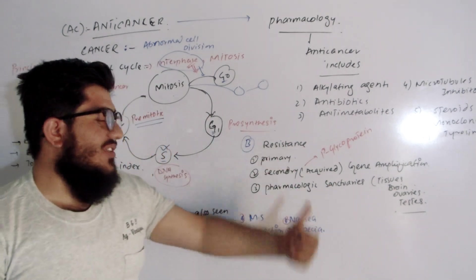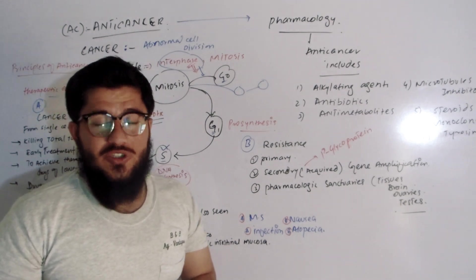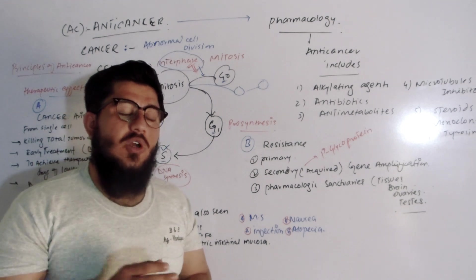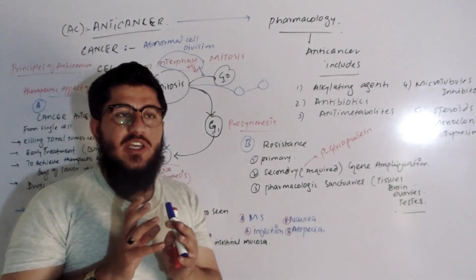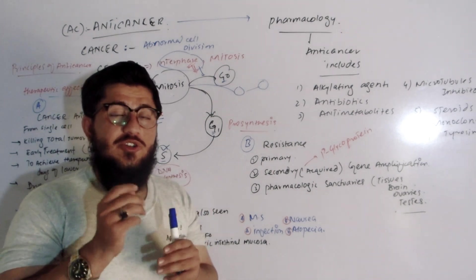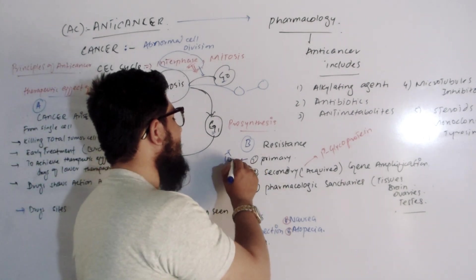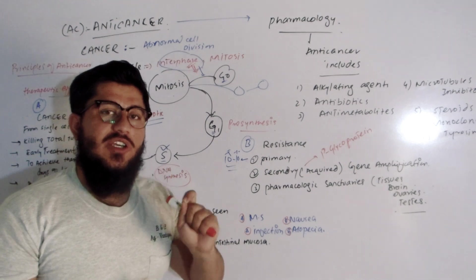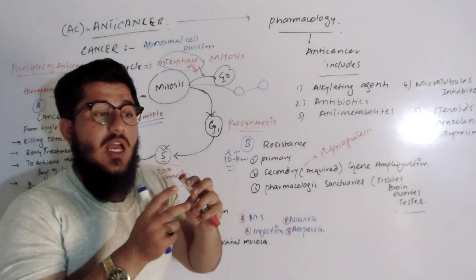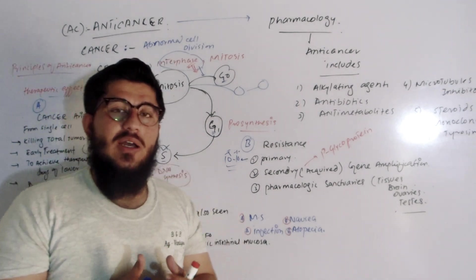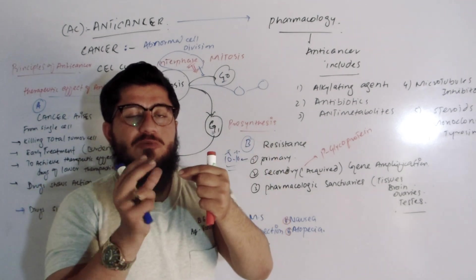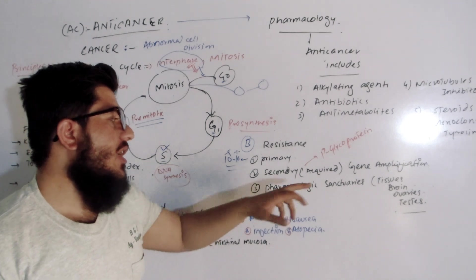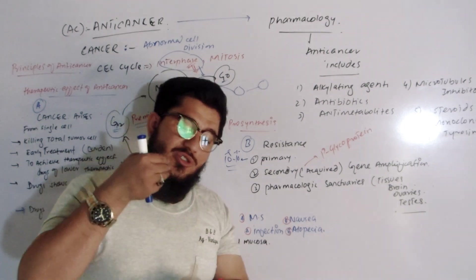The second point we are discussing is resistance. When we use chemotherapy many times, resistance develops in two ways. The first is primary resistance: when you are using an anti-cancerous drug, the cancerous cells undergo gene mutations at a rate of around 10 to the power of minus 5 to minus 10. When the gene is mutated, the drug's specific target — the receptor — changes, so the drug can no longer act on that cell.